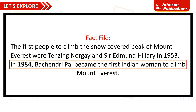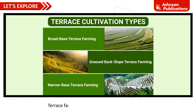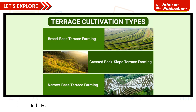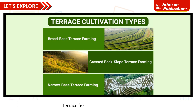The first people to climb the snow-covered peak of Mount Everest were Tenzing Norgay and Sir Edmund Hillary in 1953. In 1984, Bachendri Pal became the first Indian woman to climb Mount Everest. Terrace farming is a type of farming on hill slopes where steps are built on slopes to grow crops, which also prevents soil erosion.